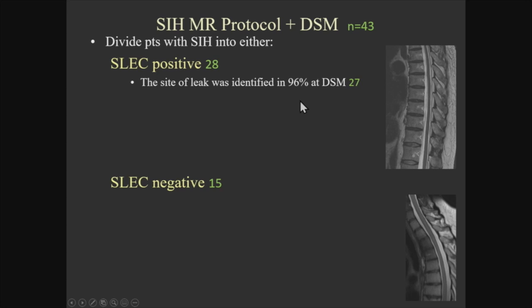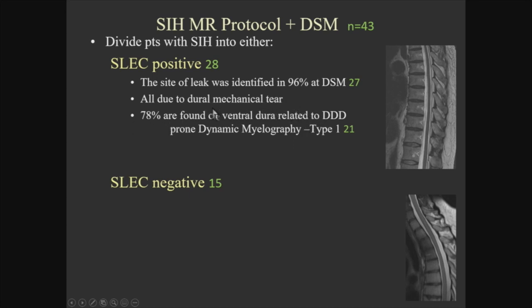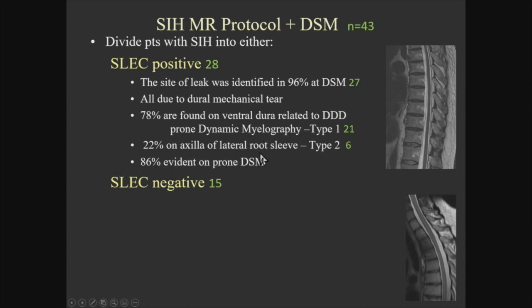All SLEC-positive patients have a dural-type mechanical tear — either type 1 or type 2. In our numbers, 78% are found on the dura, and 22% are found laterally. About 80% of type 1s and type 2s are evident in the prone position, which is why I start prone — it gives the best yield. If they're SLEC negative, the site of the leak was identified in 67% of my cases, meaning I'm missing about 30% of these people. They're never ventral. They don't respond well to epidural blood patching, and largely they fail and go on to surgery.